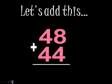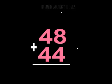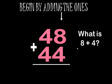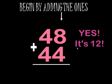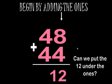Let's add the problem 48 plus 44. To find the sum of 48 plus 44, the first thing I have to do is add the two addends in my ones column. What is 8 plus 4? Use the strategies that we've talked about in class to come up with the sum of 8 plus 4. It is 12.